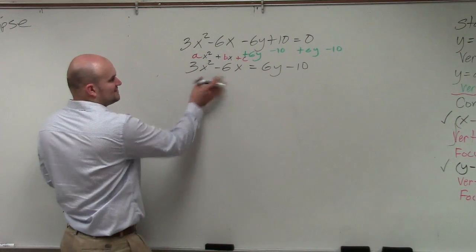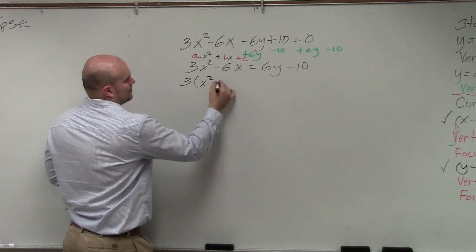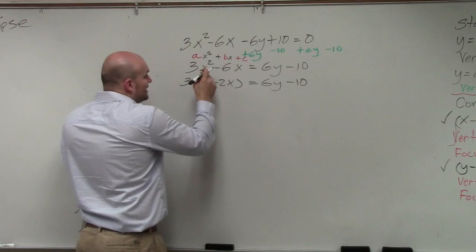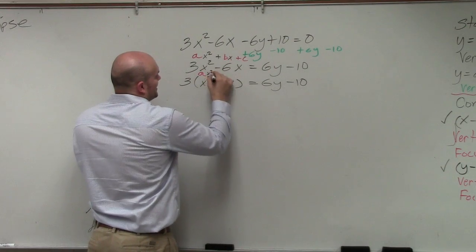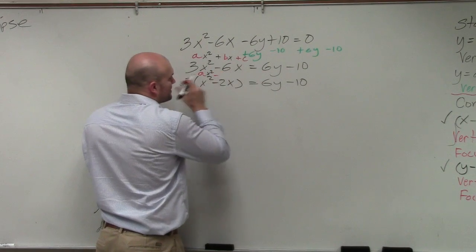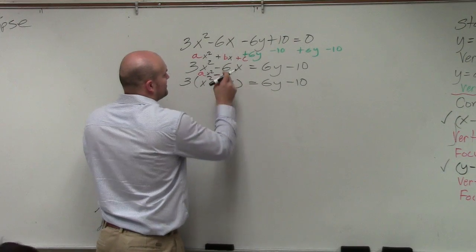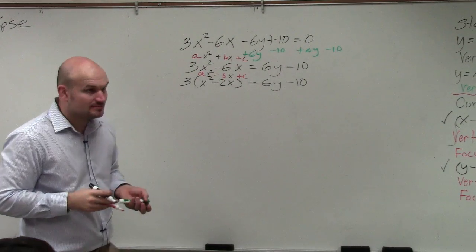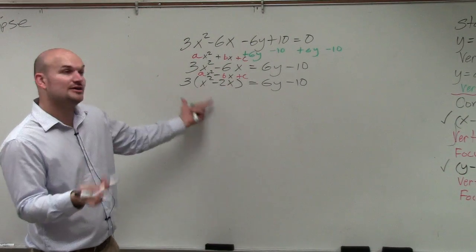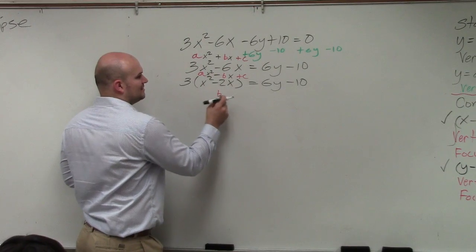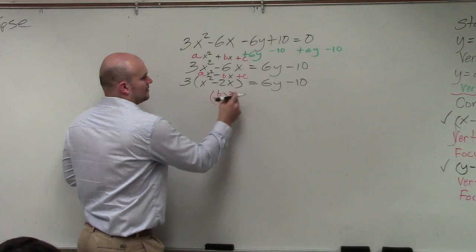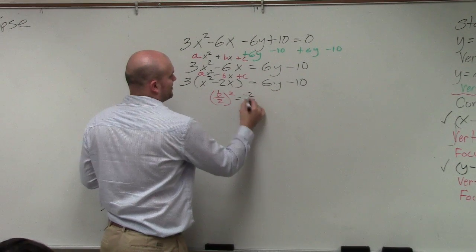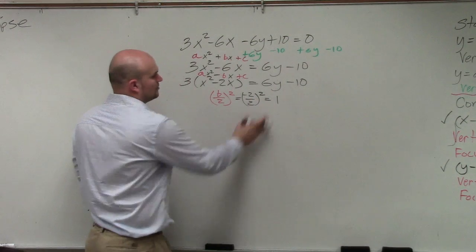So the first thing I'm going to do on this left side here is factor out of 3. Now it's x² - 2x + c, but we still don't have the c, right? So how do you complete the square? The process is take b divided by 2 and square it. So all I'm simply going to do is -2 divided by 2, square it, which equals 1.